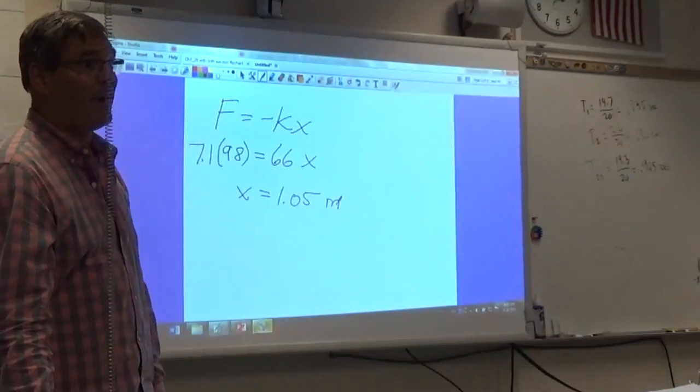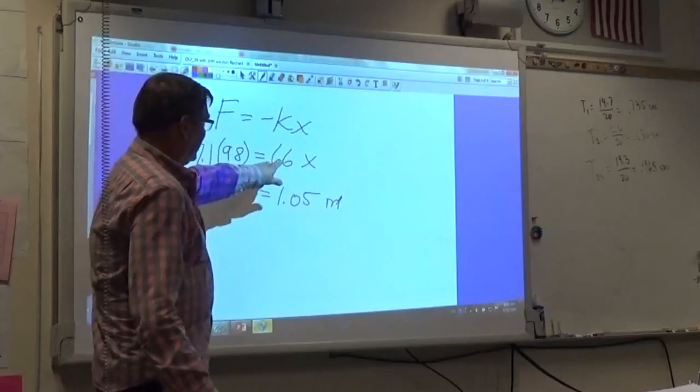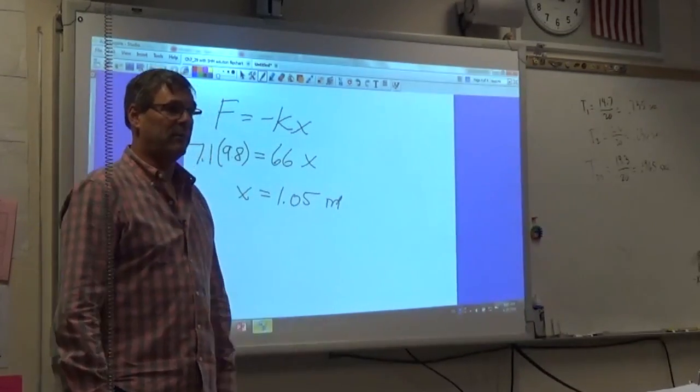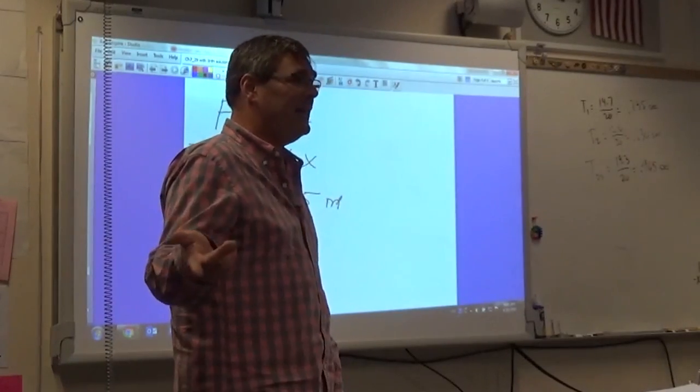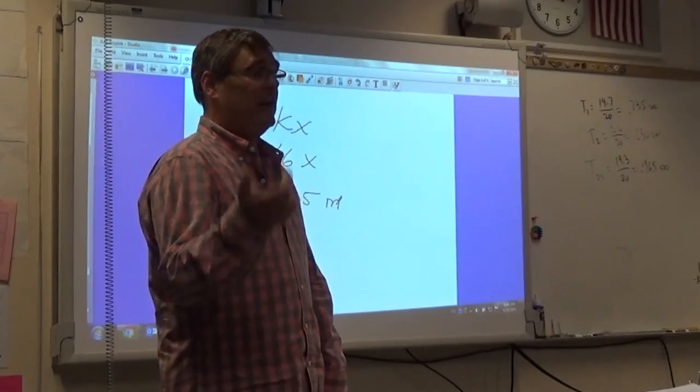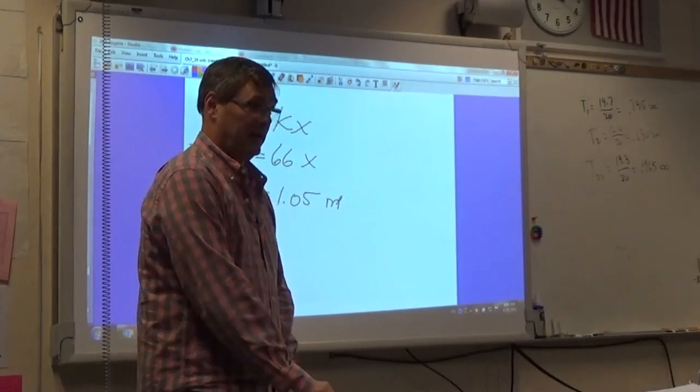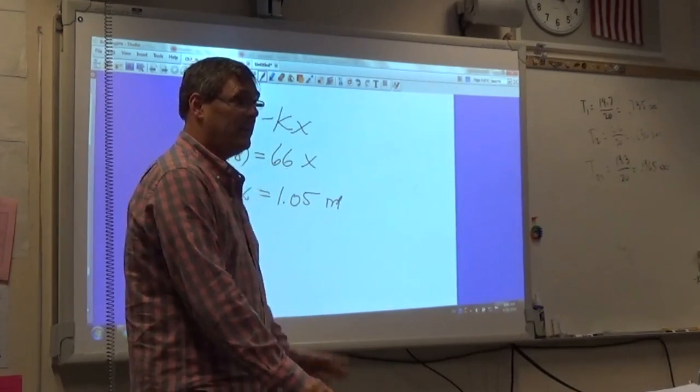So if we had just measured that stretch... 66 times 1.05 would have told us the weight of the bowling ball straight off. So the oscillation thing is another way of doing it. Stretching it and measuring the stretch certainly is the easier way of doing it. But let me ask you this.